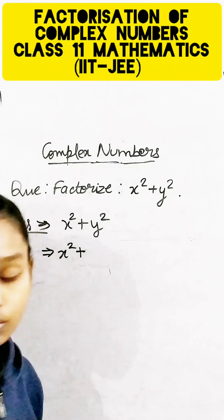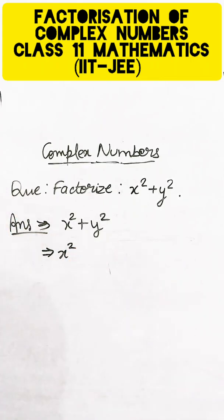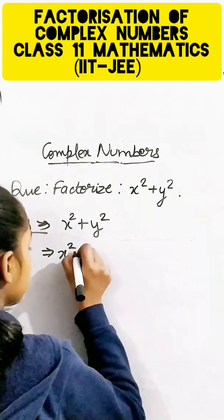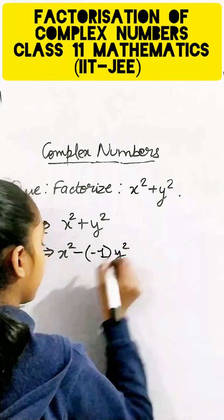This y² I can also write using negative 1, because we can write it as (-1)y². So it's going to be minus i²y².